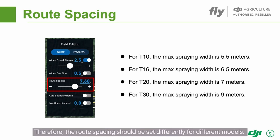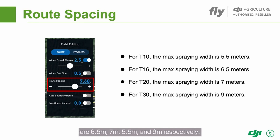Spraying an area multiple times may cause phytotoxicity. Therefore, the row spacing should be set differently for different models. The maximum spraying widths of the T16, T20, T10, and T30 are 6.5 meters, 7 meters, 5.5 meters, and 9 meters respectively.